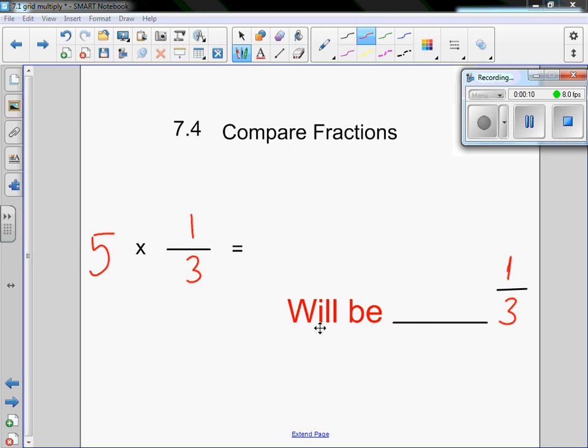Now it does it in a different way where at the end it would say 5 times 1/3 equals something will be blank 1/3. Now it's a little confusing, but what they're looking for in this blank is they're looking for greater than, less than, or equal to. So what they're really asking is the answer to this, will it be greater than, less than, or equal to, and then 1/3 in this question.